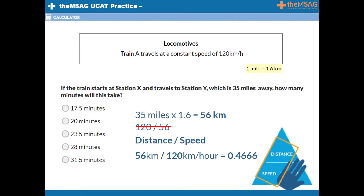We must multiply our answer by 60 to convert to minutes. 0.4666 recurring multiplied by 60 gives us 28 minutes. Therefore, option D is the correct answer to this question.